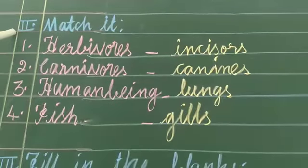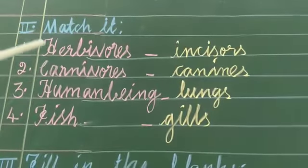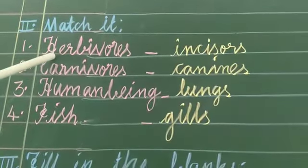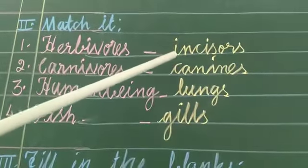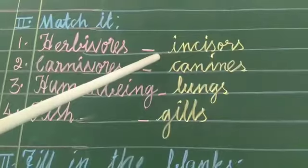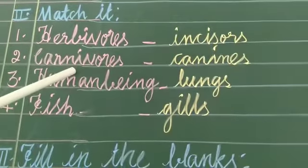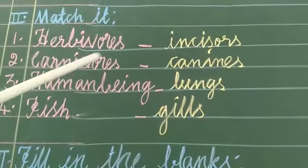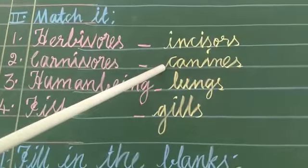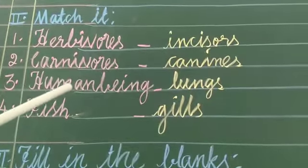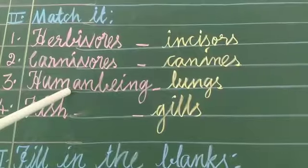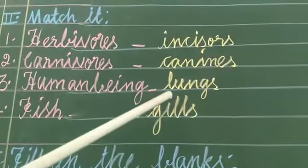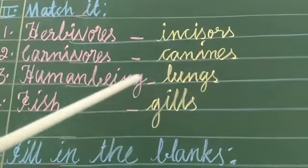Second Roman: Match the following. Herbivores, Incisors, Carnivores, Canines. Human beings — Lungs. Fish.